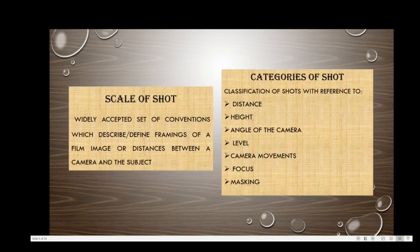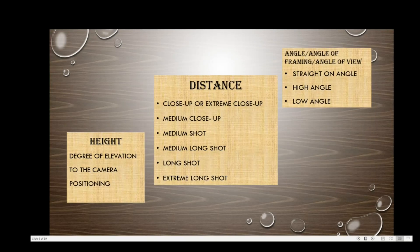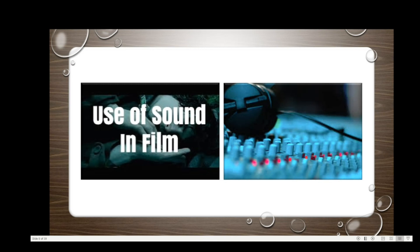Moving on to the second element: sound. Sound is one of the most important aspects of film because cinema was silent for many decades. Among the pioneers who tried to incorporate sound into cinema, the first person was Thomas Alva Edison. He first invented the phonograph and tried to incorporate it with the zoopraxiscope, an instrument used at the very beginning of films.